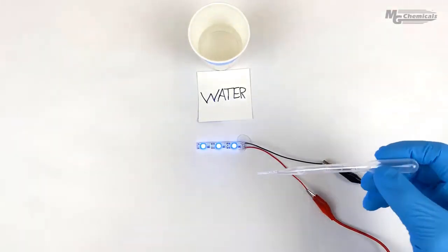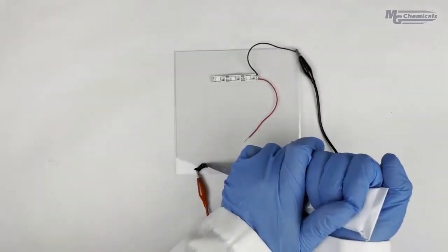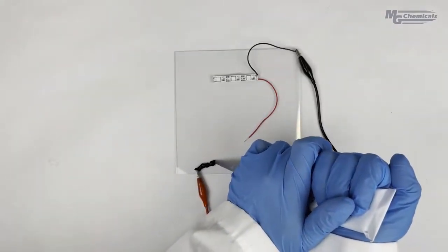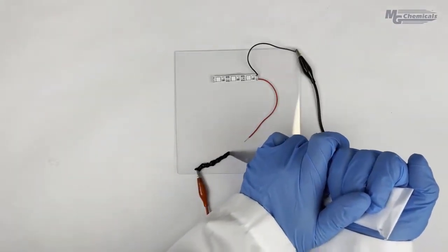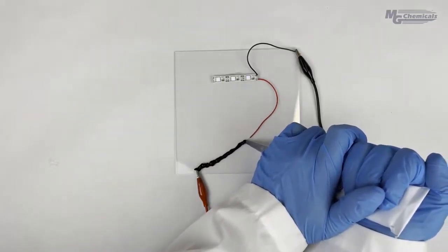For our next demonstration, we'll show how the carbon conductive grease can be used to bridge electrical contacts to facilitate a current flow. The grease provides a path for the current to flow between the two leads so the light can function.